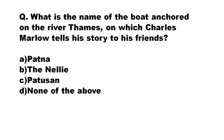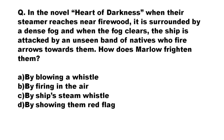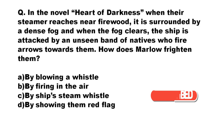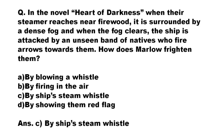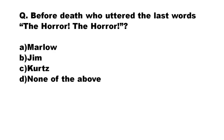Our next question: what is the name of the boat anchored on the River Thames on which Charles Marlow tells his story to his friends? The options are Patna, the Nellie, Peterson, none of the above. The correct answer is the Nellie. Our next question: in Heart of Darkness, when their steamer reaches near firewood it is surrounded by dense fog, and when the fog clears the ship is attacked by natives who fire arrows — how does Marlow frighten them? The options are: by blowing a whistle, by firing in the air, by the ship's steam whistle, by showing them a red flag. The correct answer is option C: by the ship's steam whistle.